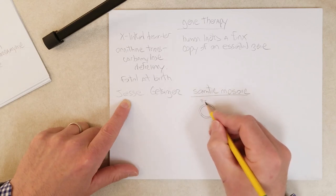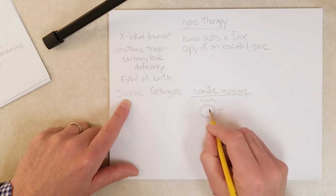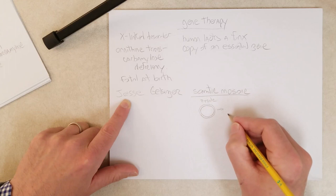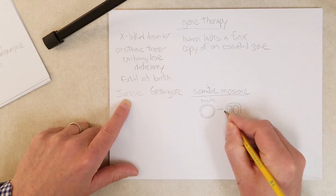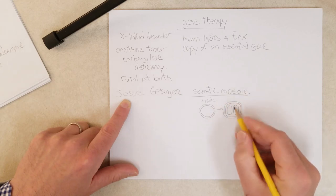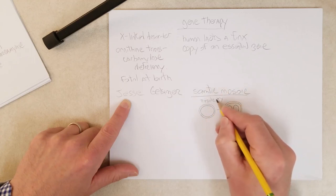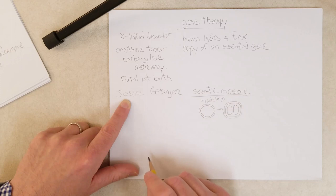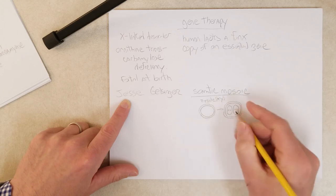So if we have a zygote here and the first cell division is called cleavage, right? And so we have two cells which are inside the zona pellucida. Now let's say this is an XY zygote, one X chromosome, one Y chromosome. So every cell has an X chromosome and a Y chromosome. And after this division here, after this mitosis, we have an X and a Y over here and an X and a Y over here.